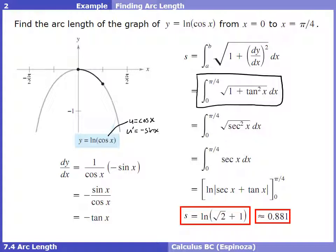Plugging in the top bound of π/4 and the bottom bound of 0, we end up with ln(√2 + 1). That would be the final exact answer. If you wanted a decimal approximation, it would be approximately 0.881. So other than all these integration steps, we haven't seen much complexity — for a lot of these problems, you really just need to worry about the setup of that formula.